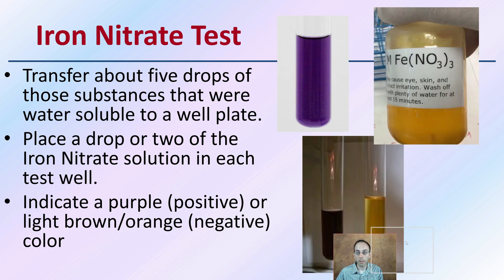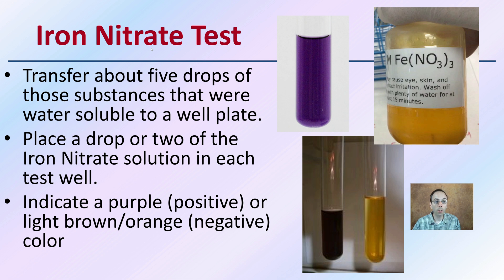For the iron nitrate test, transfer about five drops of the substances from the water-soluble well plate test and place a drop or two of iron nitrate solution in each test well. A purple coloration is a positive result, while a light brown-orange is negative. Note that if the sample is well lit, you'll see a deep purple color, but it could look almost black depending on the lighting.